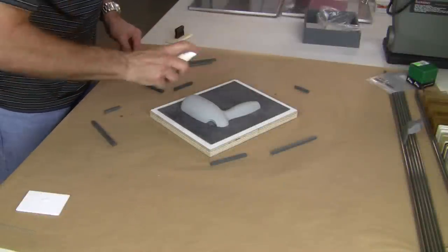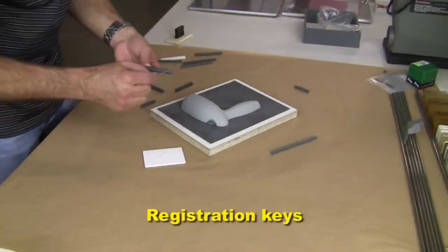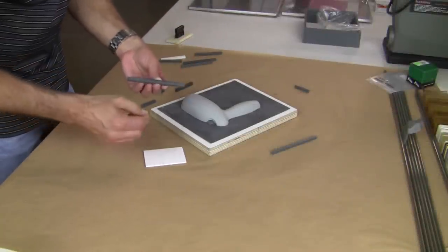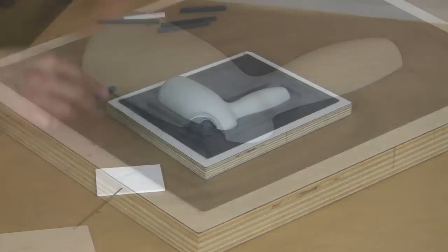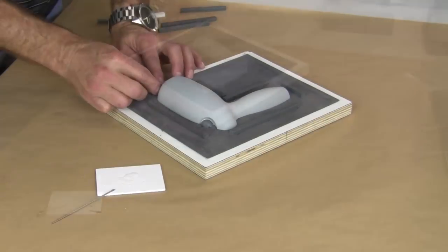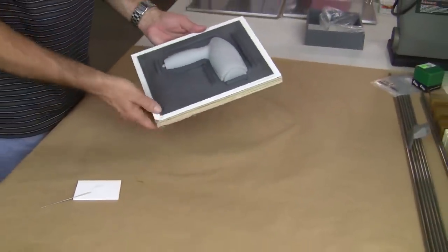Now that our pattern is securely mounted to the splitter board, we can begin adding our registration keys. Once again, small amounts of CA glue are used to fasten them down to the board. We've made sure to leave a little space between the pattern and surrounding mold box.